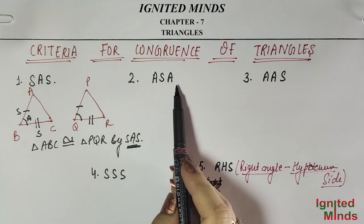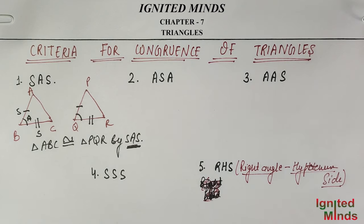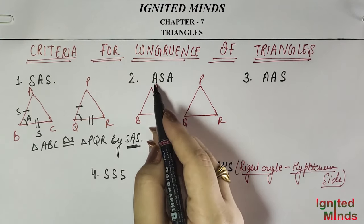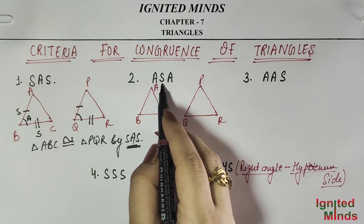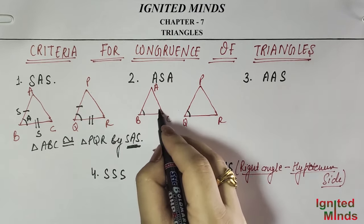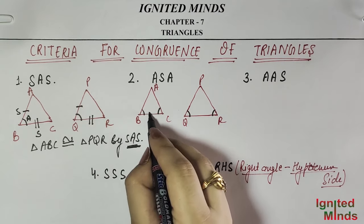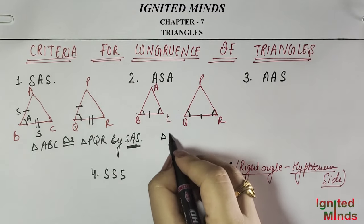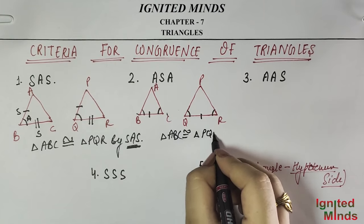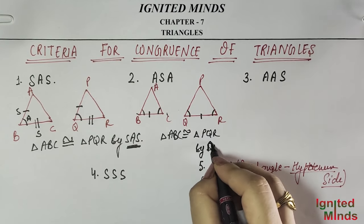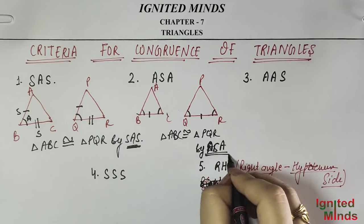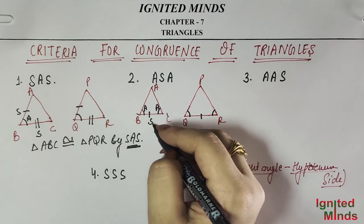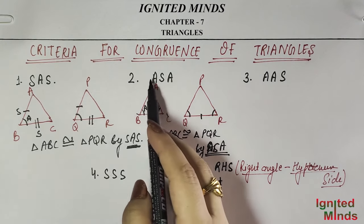Similarly, if we talk about ASA — Angle Side Angle — I will draw a figure. In ASA, we compare two angles and the side between them. This angle equals this angle, this side equals this side, and this angle equals this angle. So Triangle ABC is congruent to Triangle PQR by ASA. ASA means: between two angles, one included side is equal.